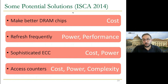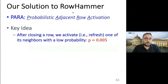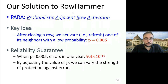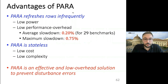All of these solutions require some cost, power, and complexity trade-offs. After our paper, Apple simply increased the memory refresh rate to try to avoid RowHammer bit-flips. But in our paper, we have a better solution called PARA — Probabilistic Adjacent Row Activation. The key idea is: after closing a row, we activate one of its neighbors with a low probability. By doing so, we significantly reduce the probability of observing a RowHammer bit-flip. PARA refreshes rows infrequently, so it has low power overhead, low performance overhead, and is stateless.